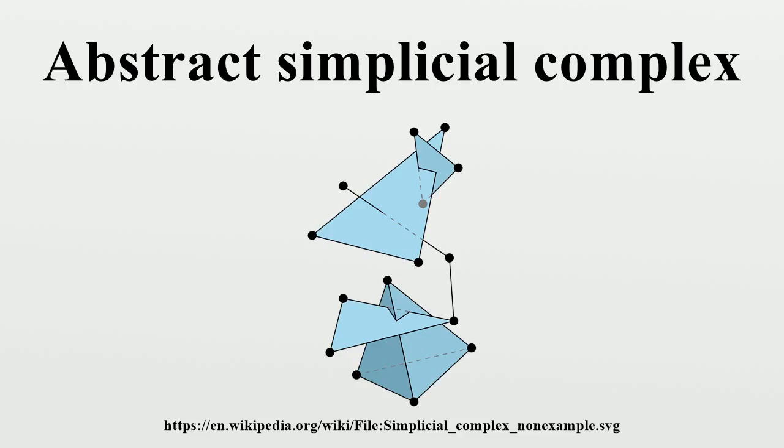Also, delta is said to be pure if it is finite dimensional and every facet has the same dimension. In other words, delta is pure if dim delta is finite and every face is contained in a facet of dimension dim delta.